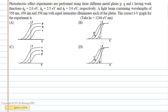A light beam containing wavelengths of 550 nm, 450 nm and 350 nm with equal intensities illuminates each of these plates.